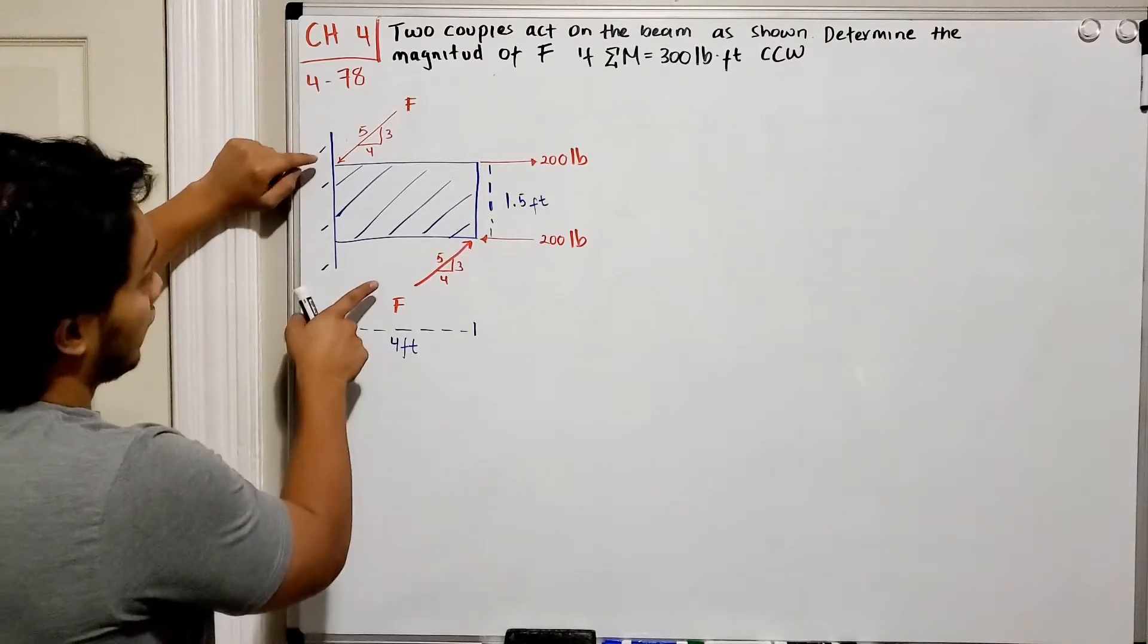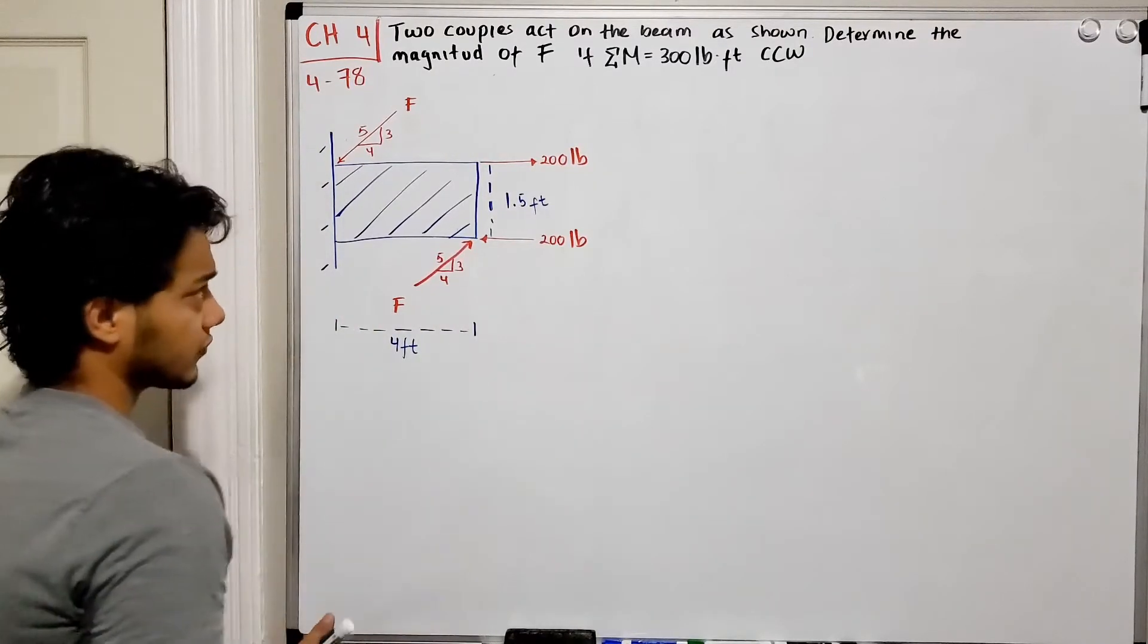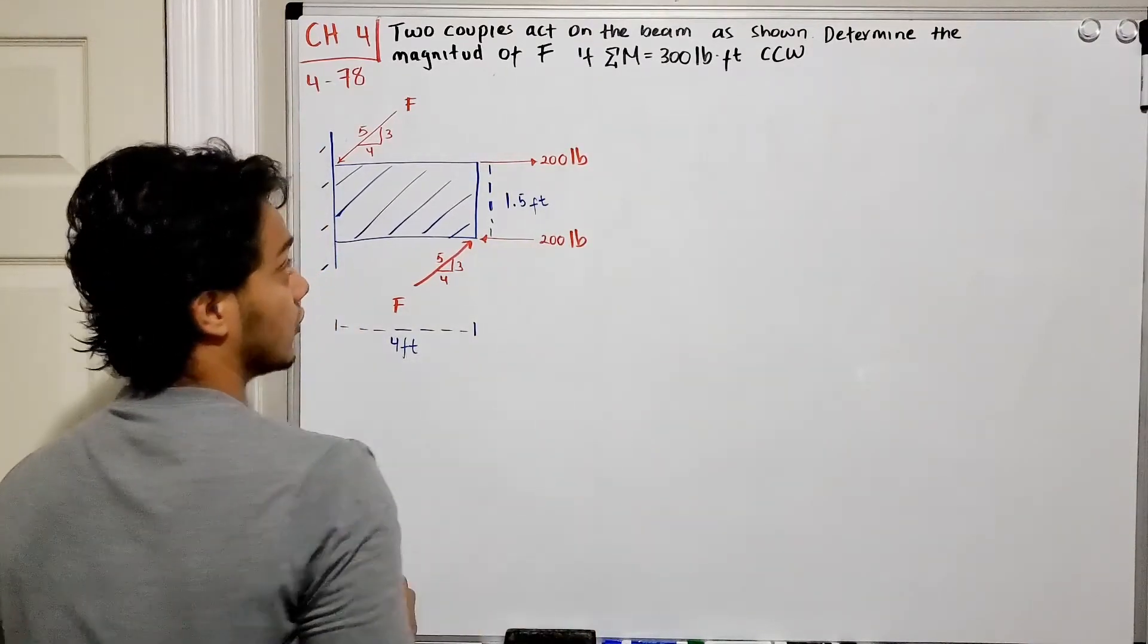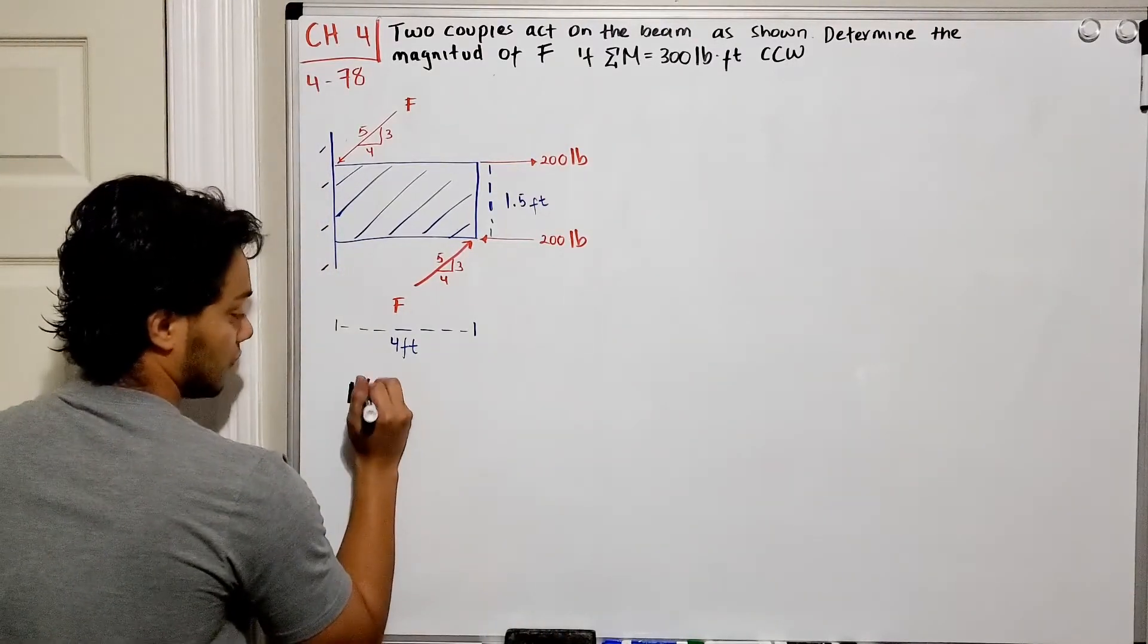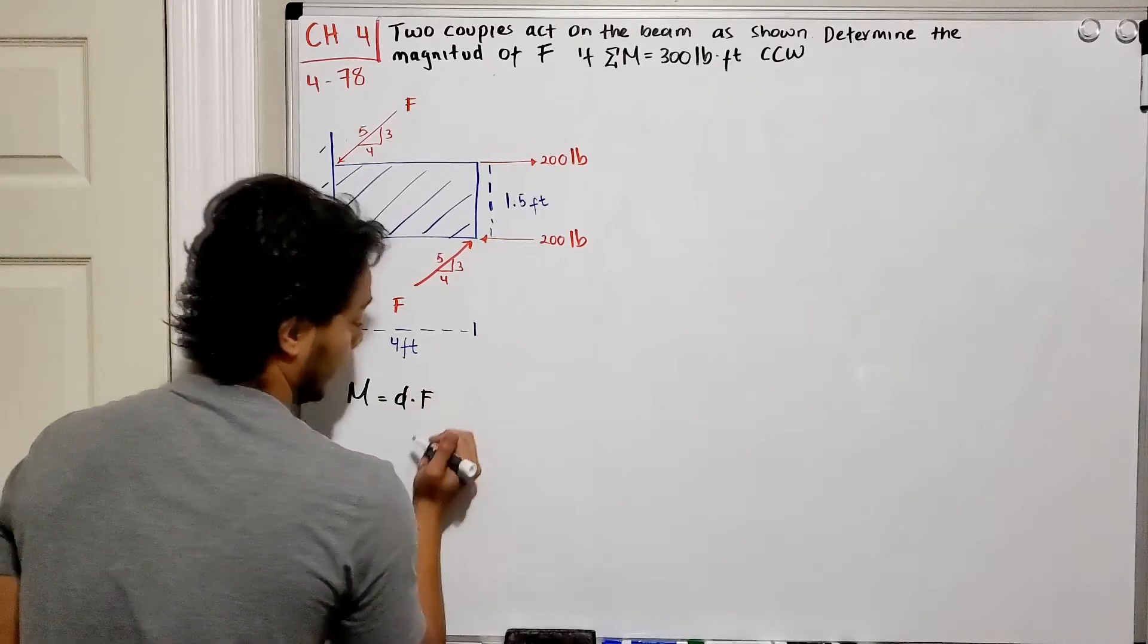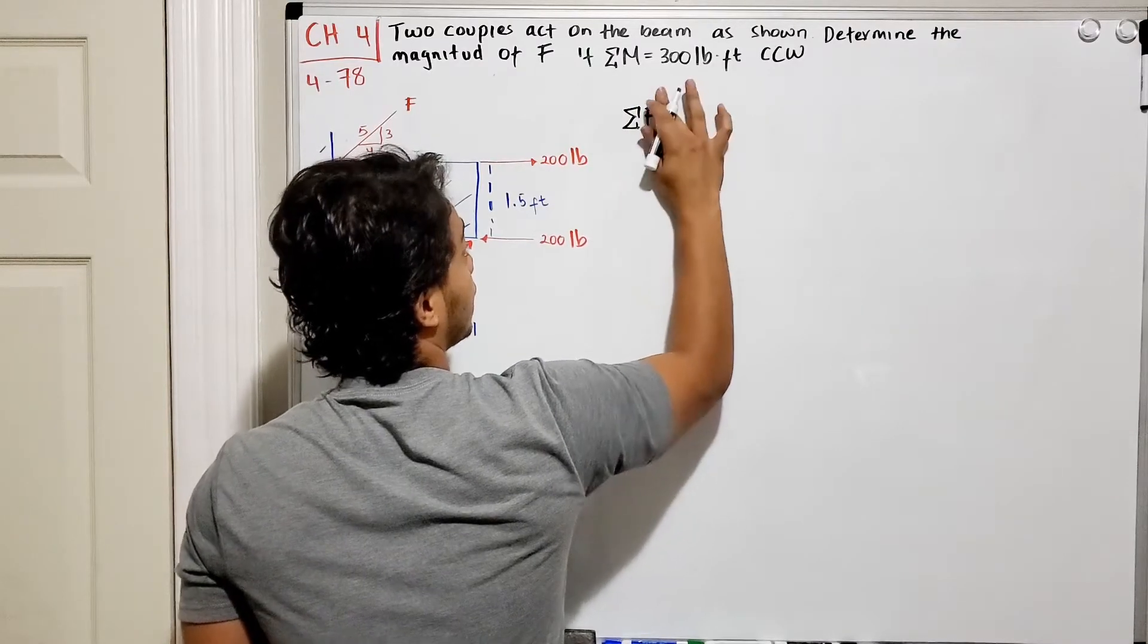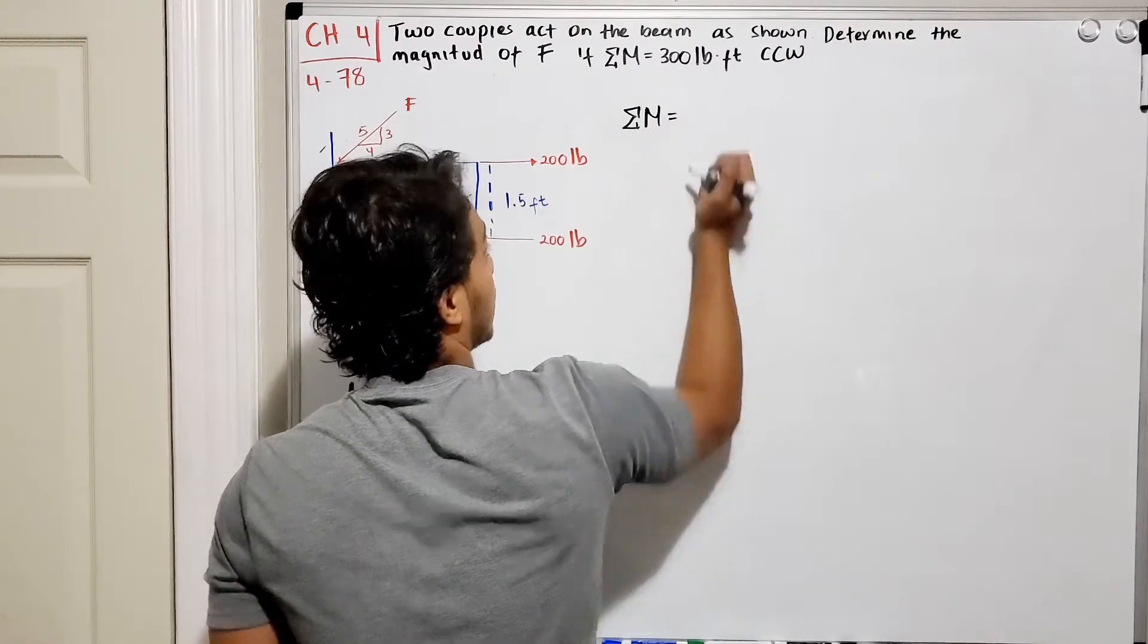So we've got this couple F and this couple 200 pounds. Now we know that the sum of forces is equal to 300 pounds in the counterclockwise direction. So we need to know that moment is going to be equal to distance times force. Okay, so if we do the sum of moments, not the forces, I'm sorry, of moments. Now let's start with my force F.